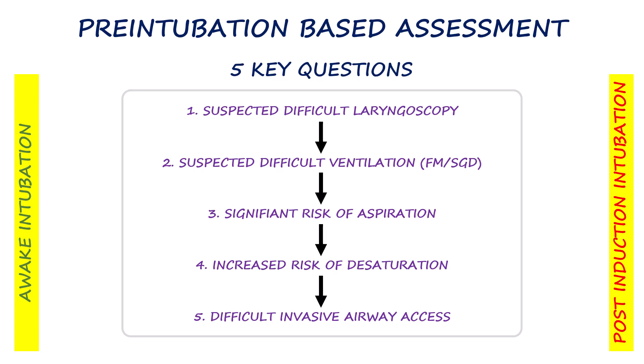Starting with laryngoscopy: if laryngoscopy is not predicted to be difficult, this usually suggests that intubation is likely to be straightforward and successful, so we may proceed with intubation after induction of general anesthesia. However, if laryngoscopy is expected to be difficult, then intubation may fail despite multiple attempts. In that case, it becomes essential to move on to the remaining questions, which help us determine whether ventilation and oxygenation can still be maintained safely if intubation is unsuccessful.